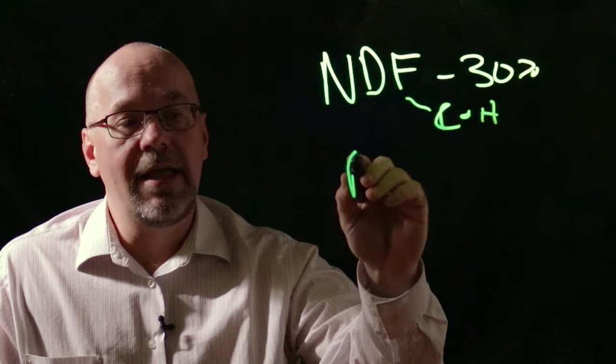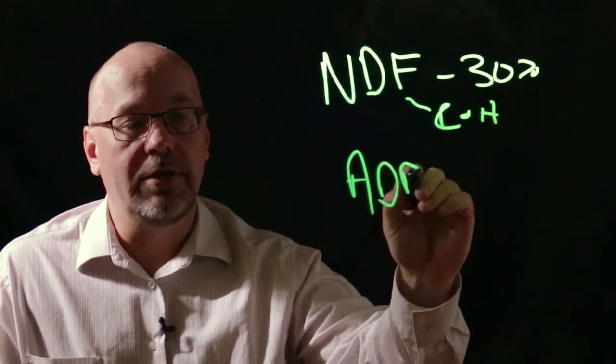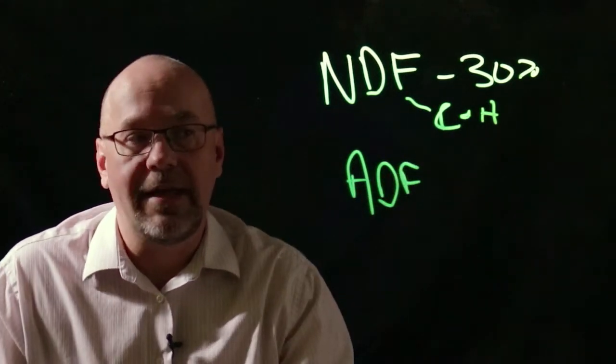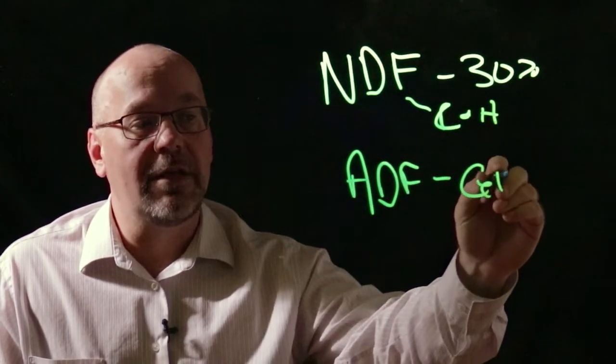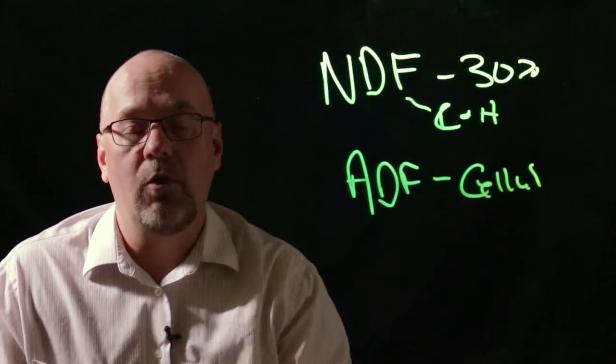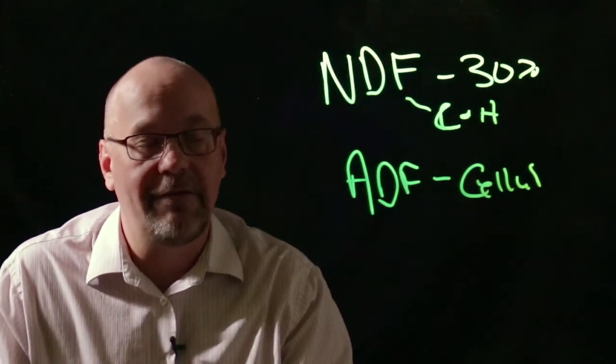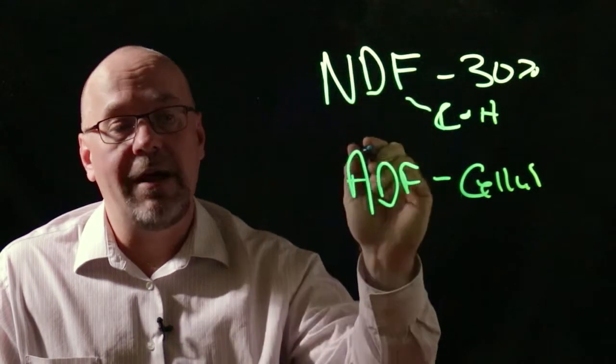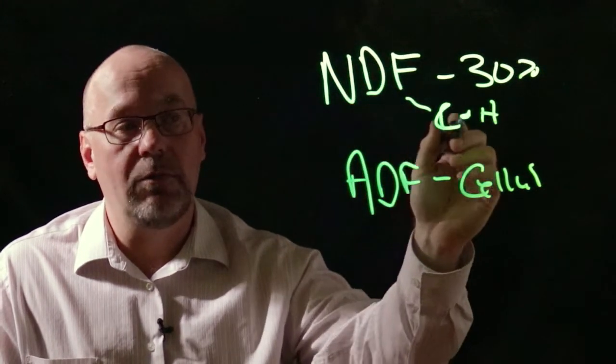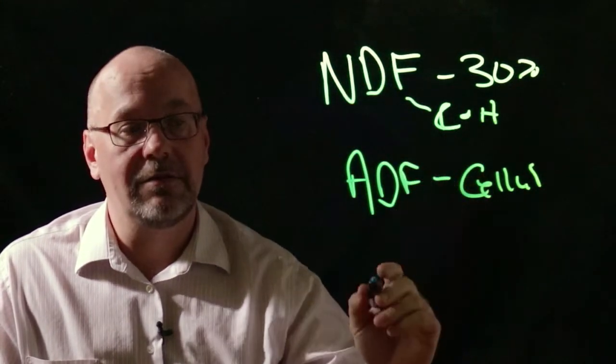If we're looking at just measuring cellulose then we can measure the ADF. So we can do a sequential analysis in a lab and actually just come up with an estimate for our cellulose that we're using or measuring in the fiber. So by difference NDF is always going to be higher than ADF because NDF includes both the cellulose and the hemicellulose.